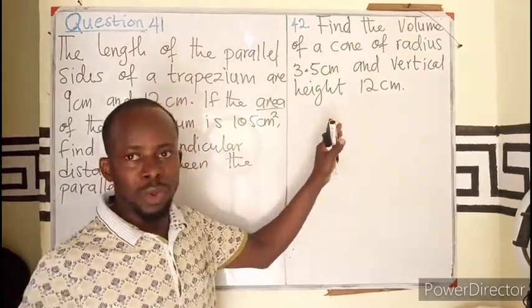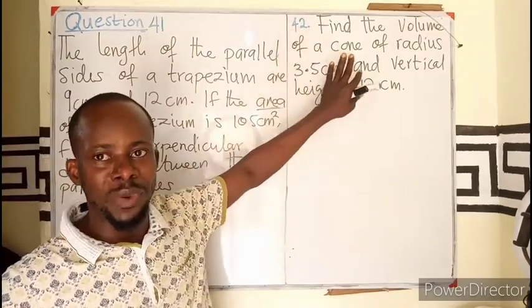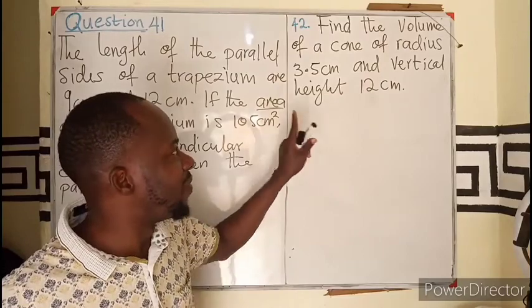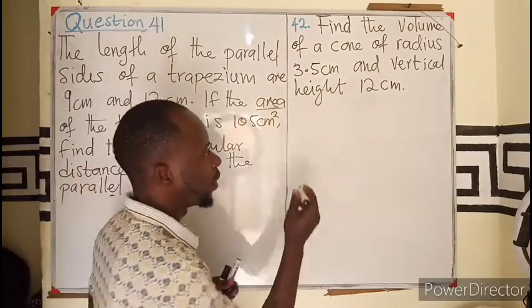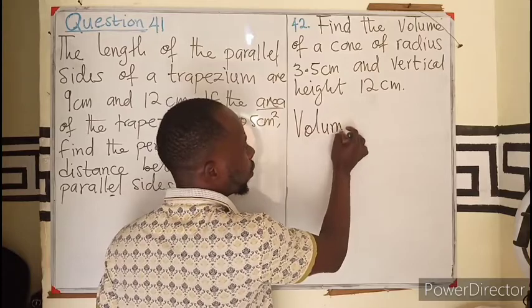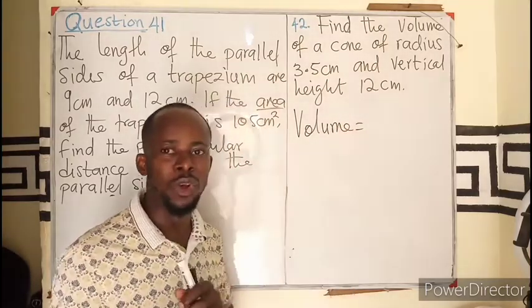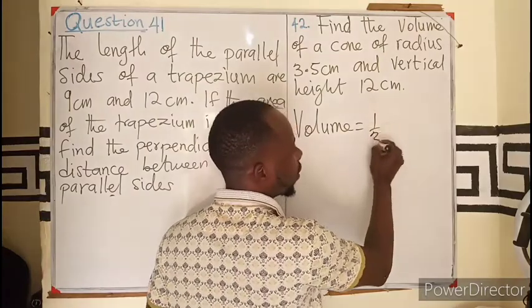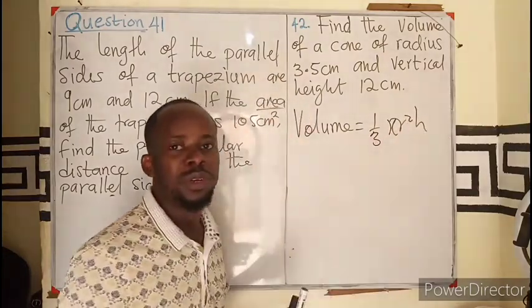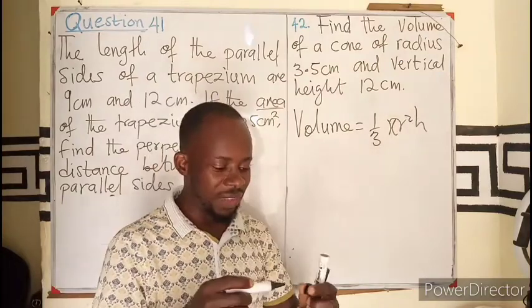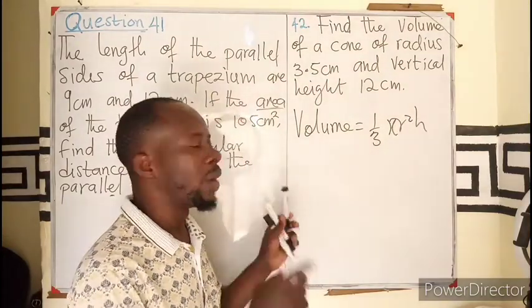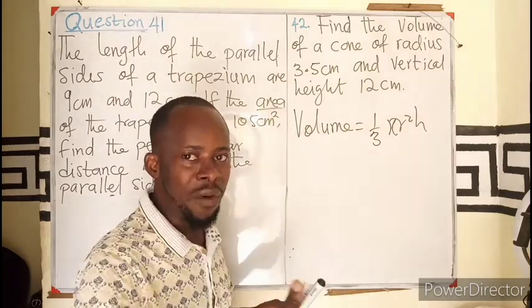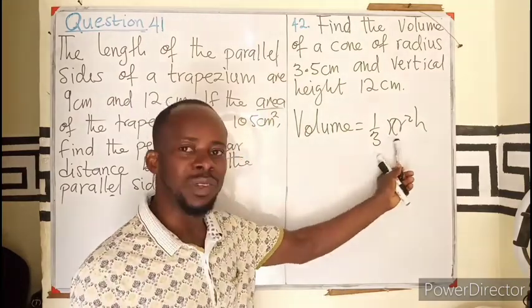Question 42, find the volume of a cone of radius 3.5 cm and vertical height 12 cm. We know the volume of a cone is one-third of the volume of a cylinder. We know the volume of a cylinder is pi R square H, so one-third times the area of the base times the height.